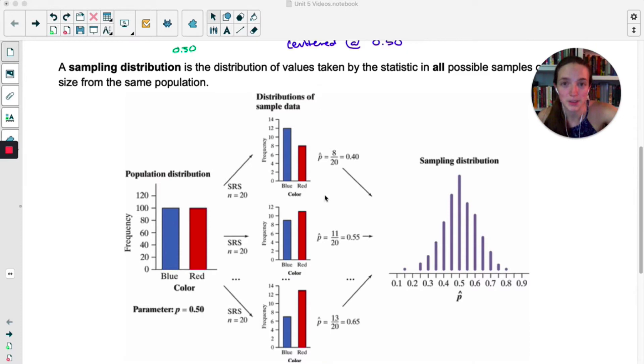On the right, you can see what the sampling distribution of p hat would look like. So once again, these were sample distributions. This is the sampling distribution. Now there are so many samples on here that it's hard to tell that this is even a dot plot, but these are dots here. They've just all kind of merged into one bar.